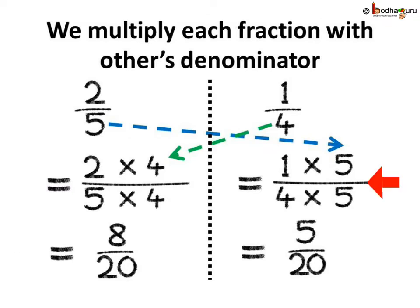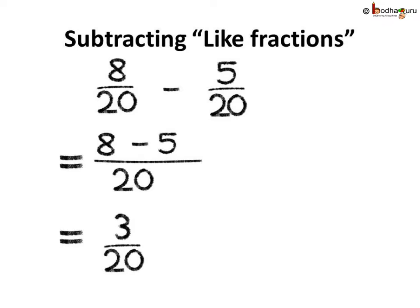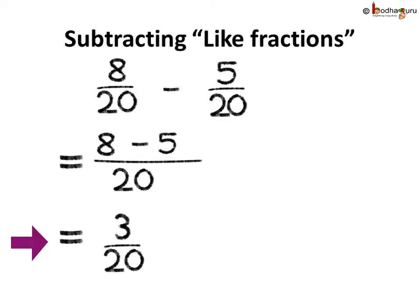Thus, 2 by 5 can be written as 2 into 4 divided by 5 into 4, which is 8 by 20. And 1 by 4 can be written as 1 into 5 divided by 4 into 5, which is 5 by 20. So we get their equivalent fractions. Now let us subtract 8 by 20 minus 5 by 20. As the denominators are same, they are like fractions, so we subtract the numerators: 8 minus 5 is 3. So the answer is 3 by 20.